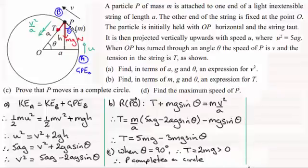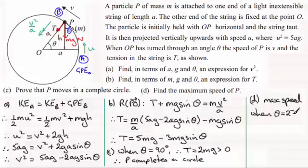Now in part D, we're asked to find the maximum speed of the particle P. And for this, the maximum speed is going to occur when P reaches the bottom here. You project it up from here, it slows down, it does make complete circles, but now it's going to start to speed up, and its maximum speed will be here at the bottom. And so that's going to be when θ is 270 degrees.